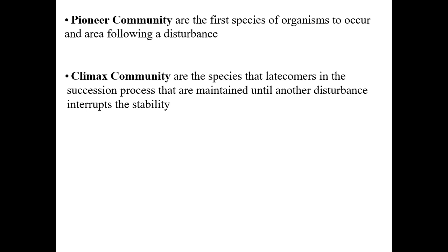To summarize the key terms: succession is a change in the community and populations over time; primary succession begins with no soil; secondary succession occurs when soil remains; the initial community that comes into an area after a disturbance is called the pioneer community; and the more mature community that develops later is referred to as the climax community.